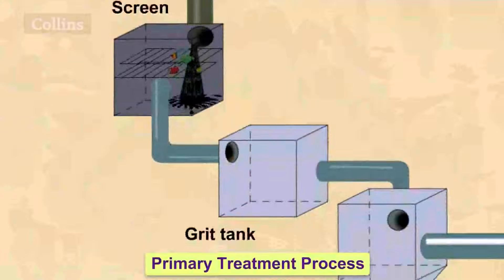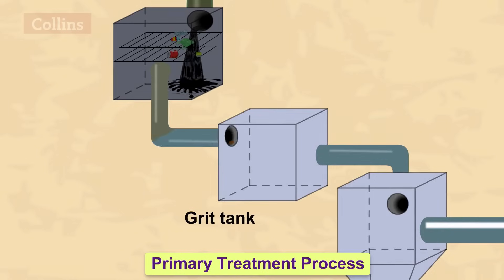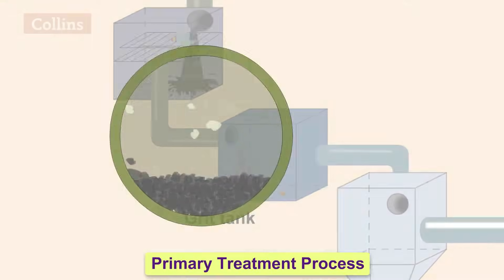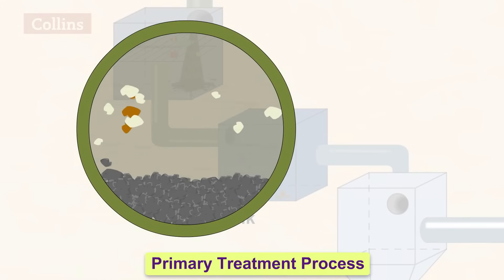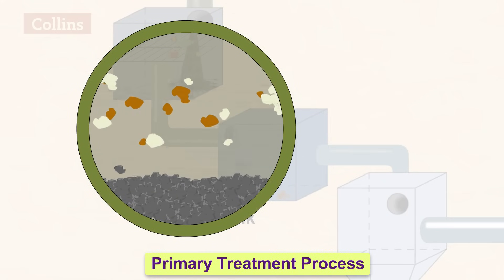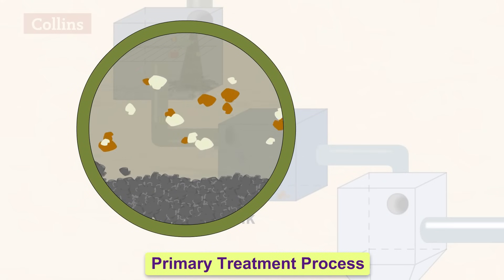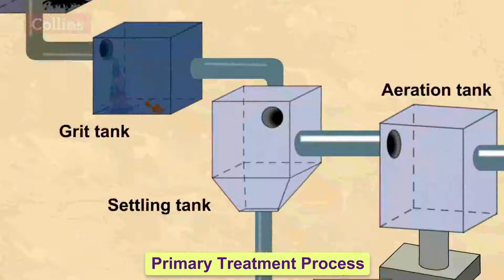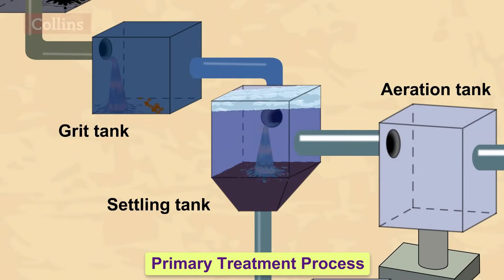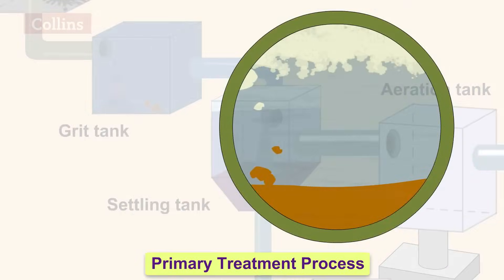In the primary treatment process, the sewage flows through the grit chamber very slowly so that the sand, pebbles and soil settle down at the bottom. The sewage then flows into the settling tank or sedimentation tank where the solid wastes like feces are allowed to settle down.